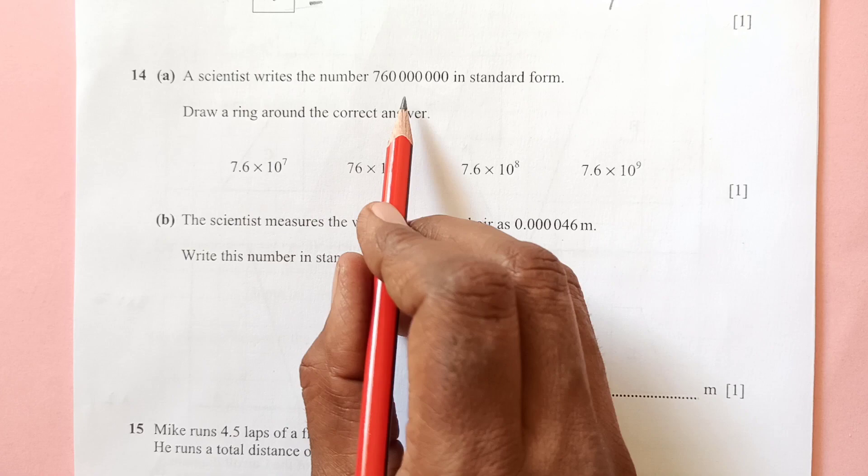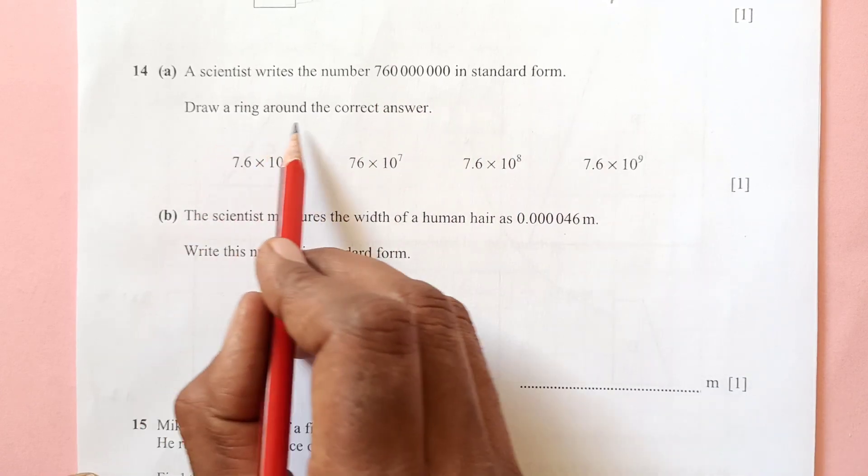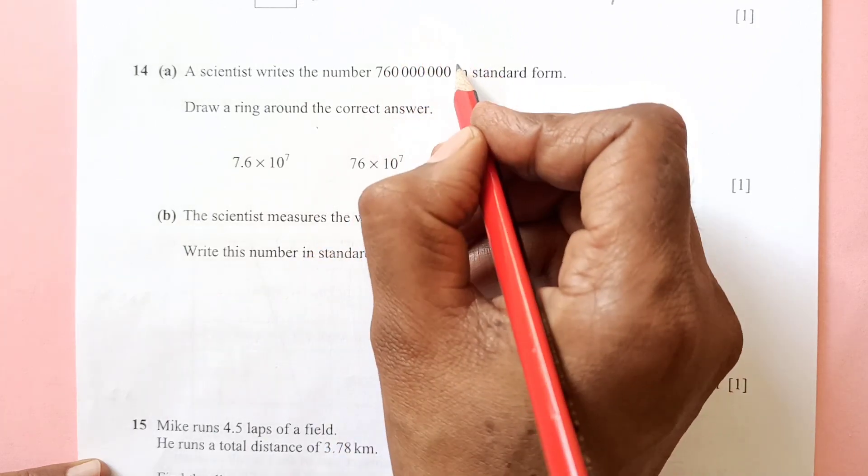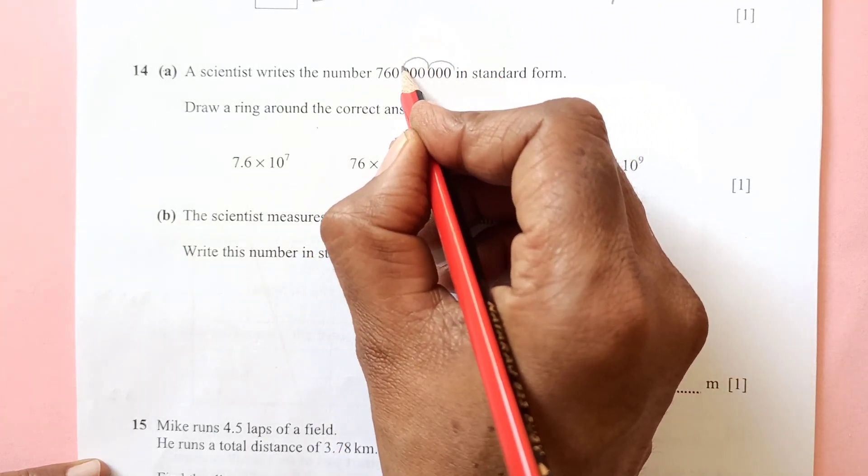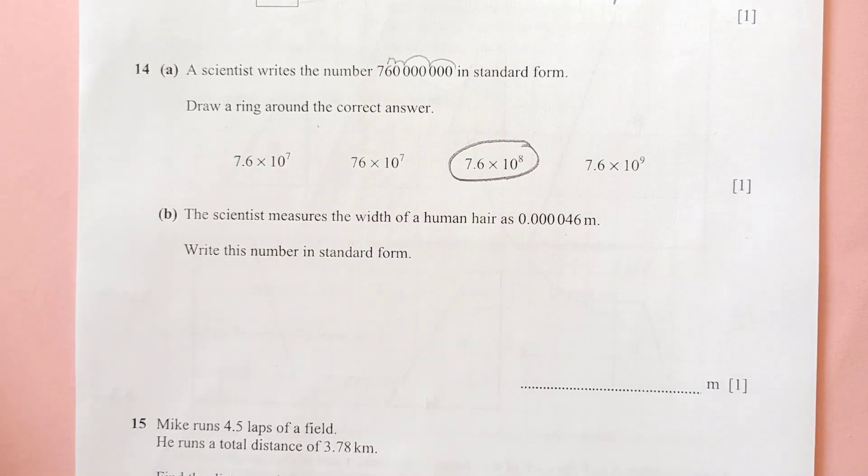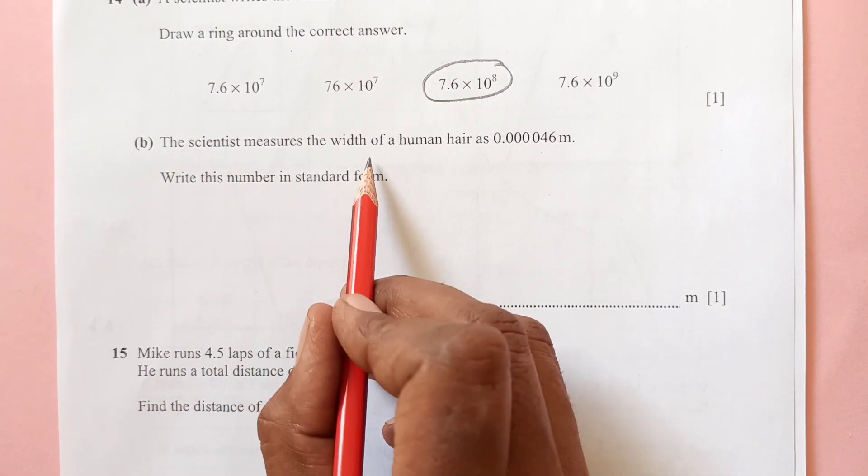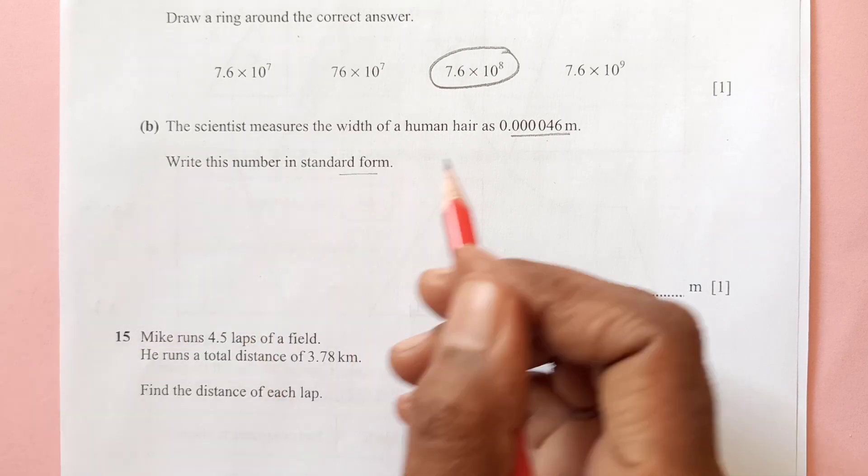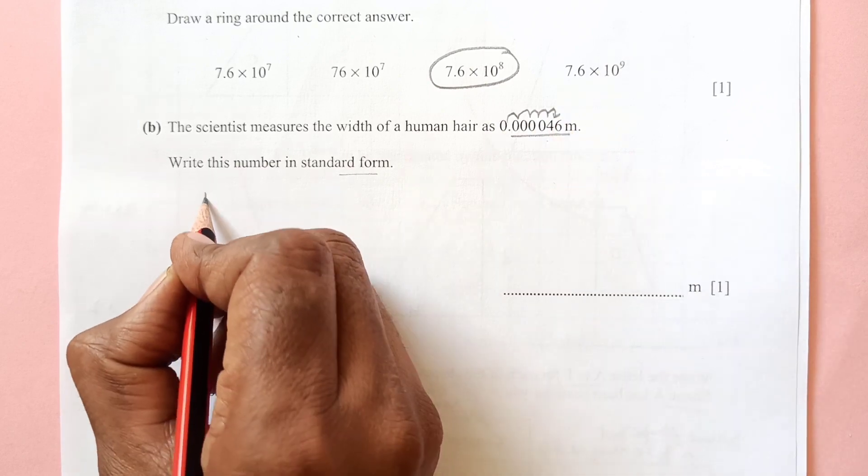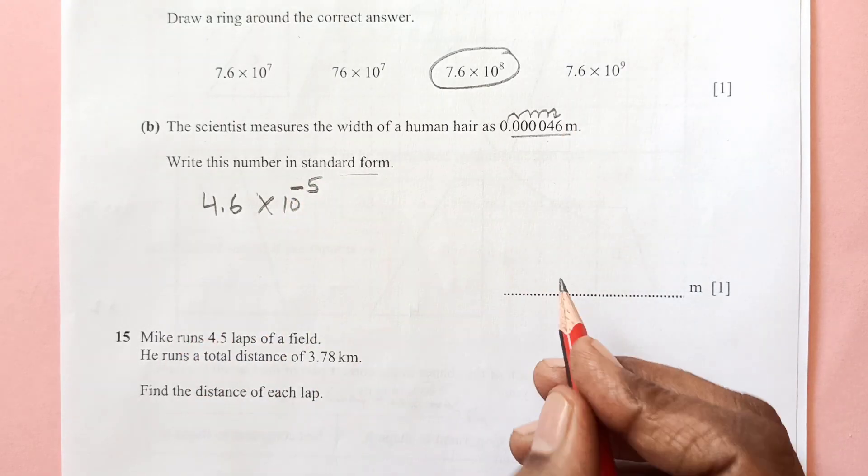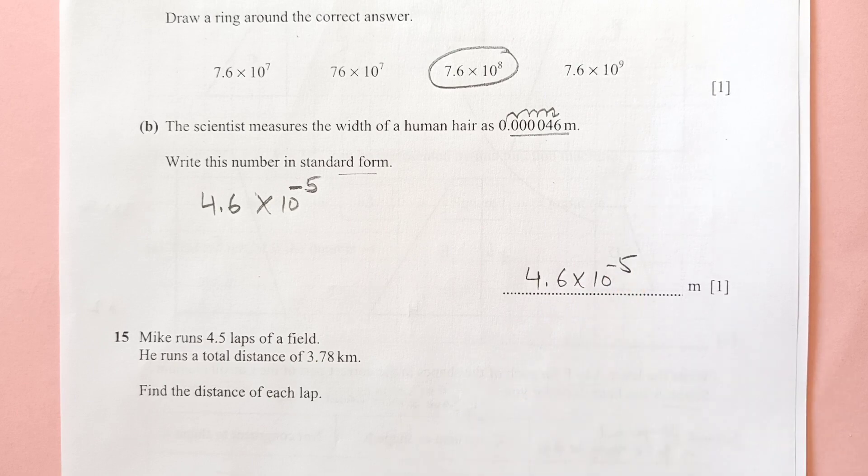Now a scientist writes a number in standard form. Draw a ring around the correct answer. Standard form - the decimal is here. We need to move the decimal here, making it 4.6 times 10 raised to power minus 5. We moved this 5 units, so that will be minus 5. So 4.6 times 10 raised to power minus 5.